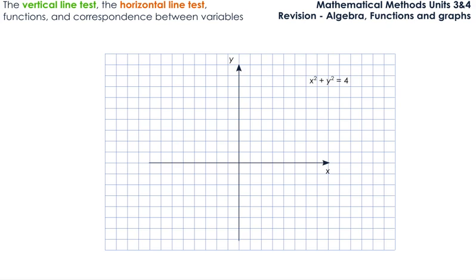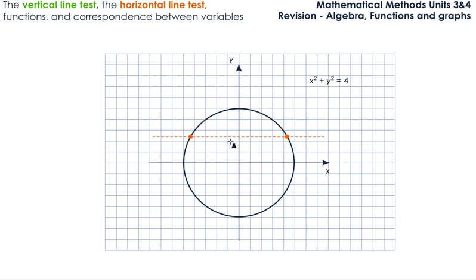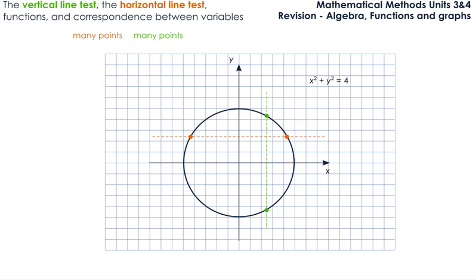The next relation is a circle — x squared plus y squared equals 4. If we draw the horizontal line on the graph, it crosses the graph in two points, so we say many. It is true that if we draw the horizontal line at the very top it would only cross in one point, but that doesn't matter because we are looking at the maximum number of points. If we do the vertical line test, a similar thing happens — we have two intercepts between the vertical line and the circle. So we have many points as well. The correspondence in this case is a many-to-many correspondence.